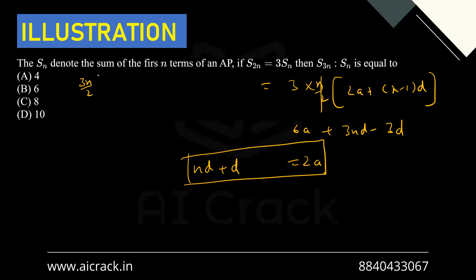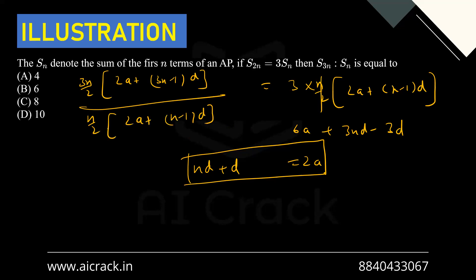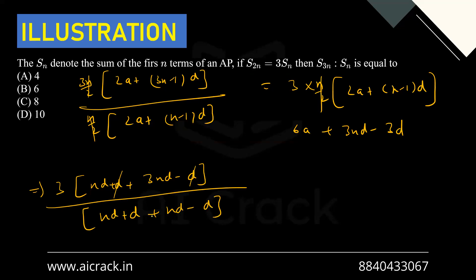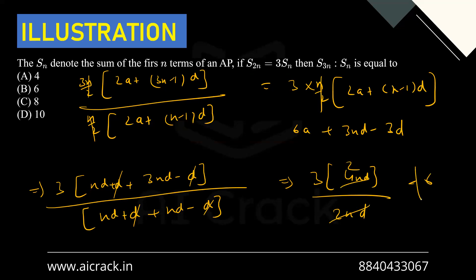Now find S3n / Sn: S3n = (3n/2)[2a + (3n-1)d] and Sn = (n/2)[2a + (n-1)d]. After cancelling n/2, and substituting 2a = nd + d, the numerator becomes 3(nd + d + 3nd - d) = 3(4nd) = 12nd, and the denominator becomes (nd + d + nd - d) = 2nd. So S3n / Sn = 12nd / 2nd = 6. The answer is 6.